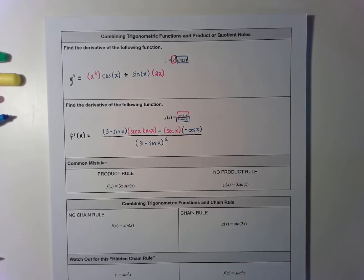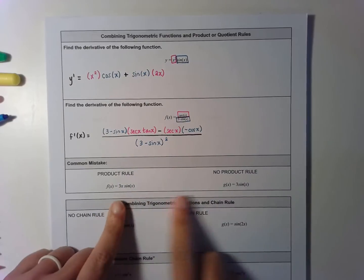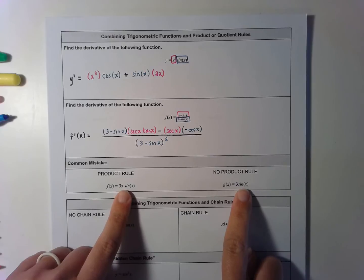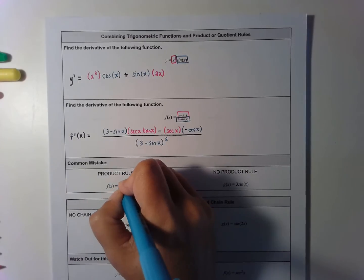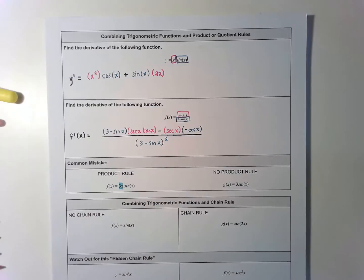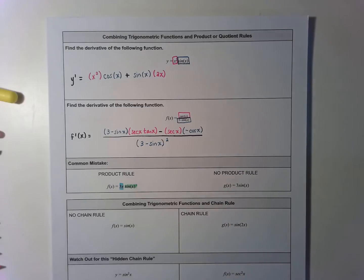The most common mistake I see is students forgetting to use product rule, or using it when they shouldn't. Product rule applies when there are two functions that each use x. For example, three x times sine of x requires product rule because both three x and sine of x involve x. But three times sine of x does NOT require product rule — the three is just a coefficient, not a separate function of x.